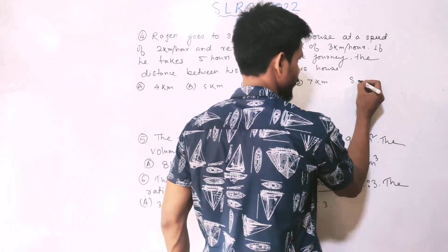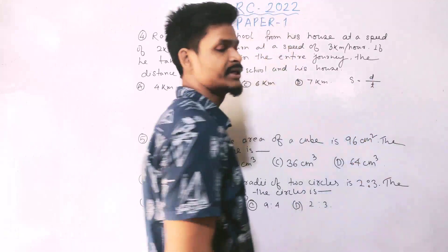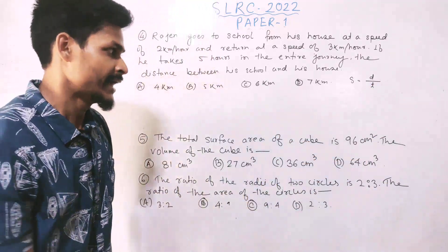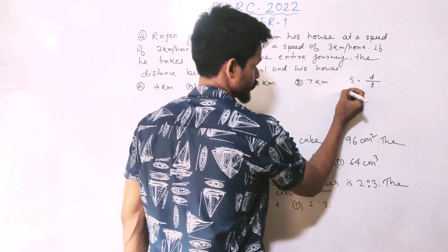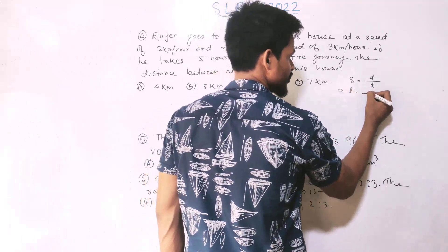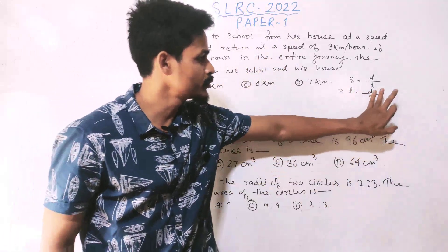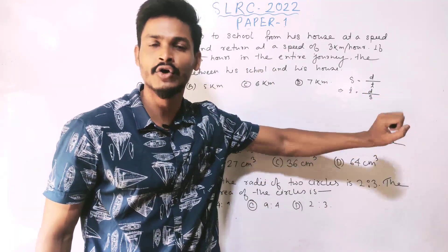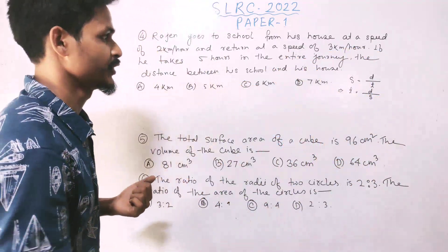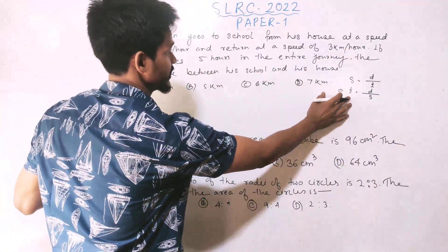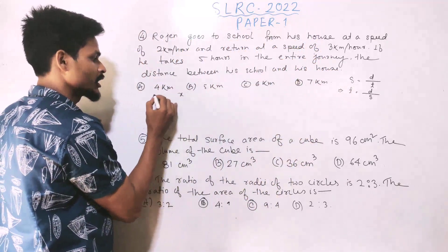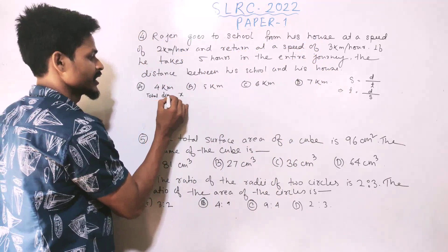Using speed equals distance by time. Let the distance be d km. Time going = d/2 and time returning = d/3. Total time is 5 hours. So d/2 plus d/3 equals 5. The total distance one way is 6 km.